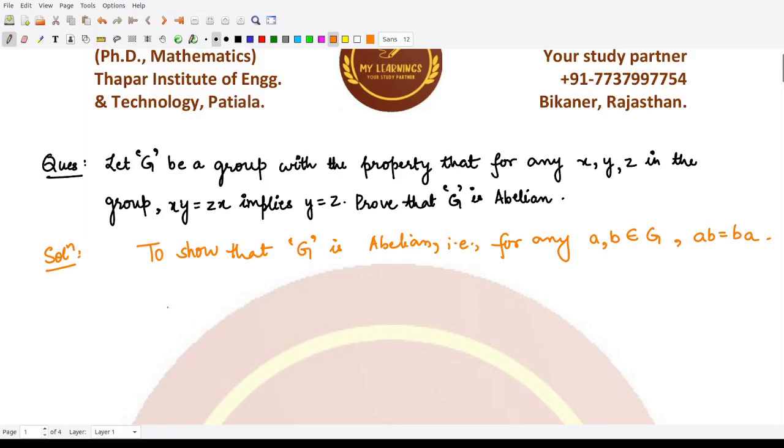Now suppose we are given x*y*x. This thing is equal to (x*y)*x, right? This is according to the associativity, where we are taking the elements x, y belonging to our group G.